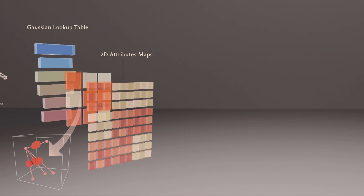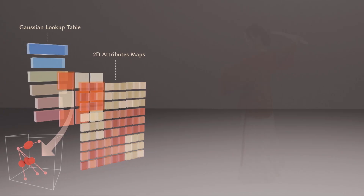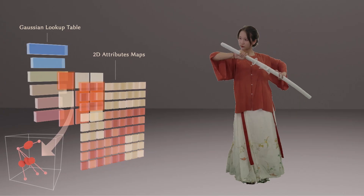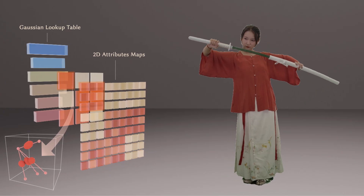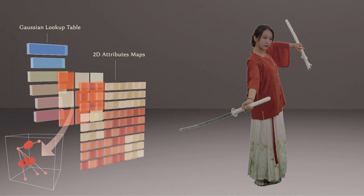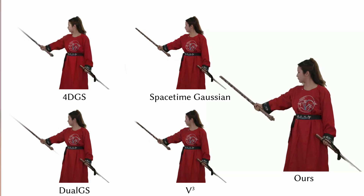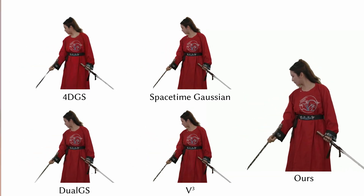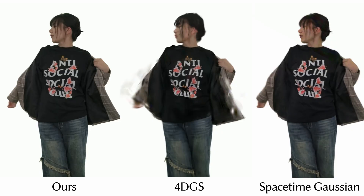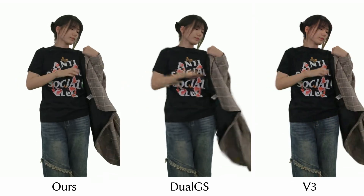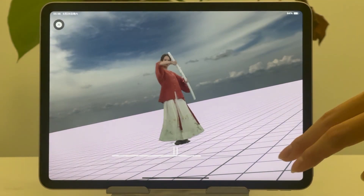we introduce a global Gaussian lookup table that records the lifespan of each Gaussian and organizes attributes into a lifespan-aware 2D layout. We compare TAU-GS against prior dynamic Gaussian representations, including time-conditioned methods 4D-GS and spacetime Gaussian, as well as tracking-based methods dual-GS and V-Cube. We showcase our volumetric video on mobile devices.